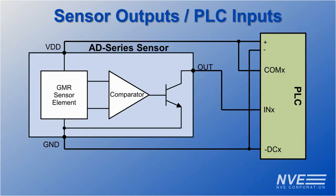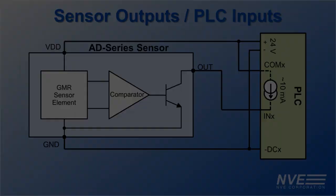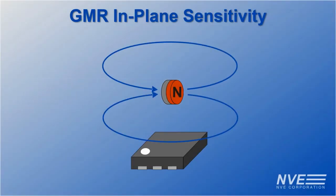PLC inputs have current sourcing so we don't even need pull-up resistors. Unlike other types of sensors, GMR sensors have in-plane magnetic sensitivity so we don't have to stand a board on edge.